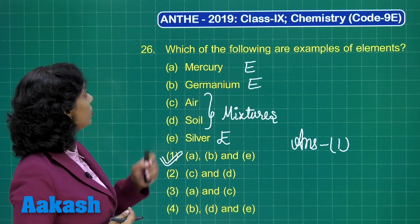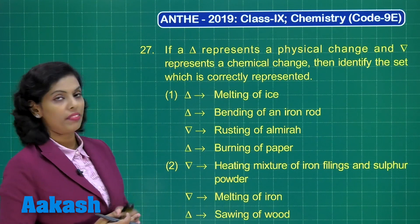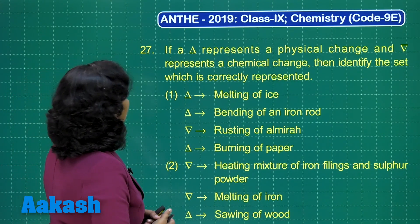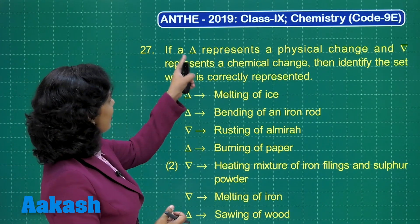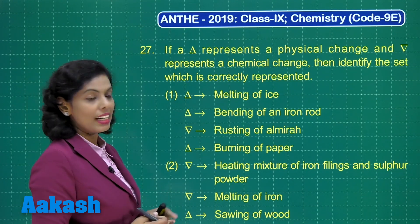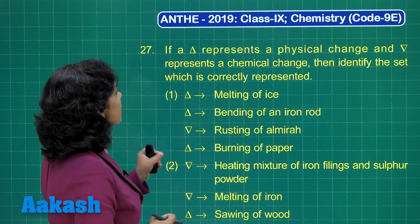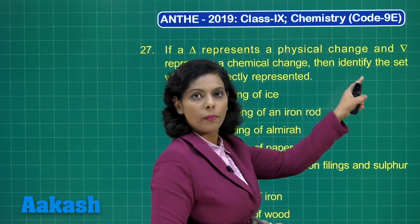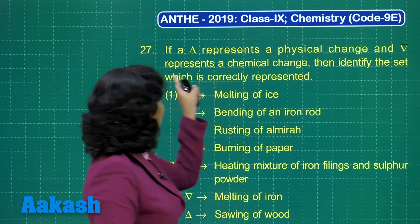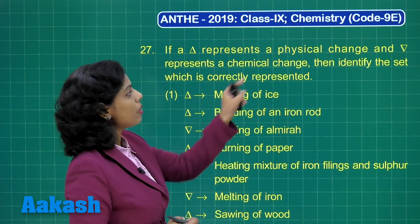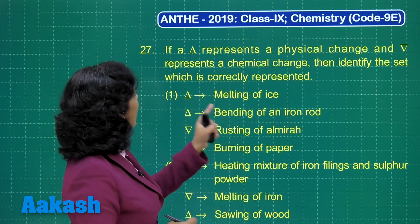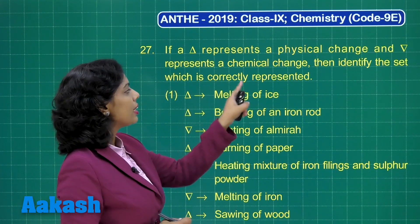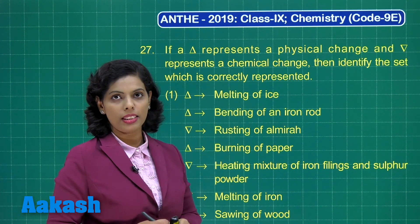Now question number 27: if a triangle (delta) represents a physical change and an inverted delta represents a chemical change, then identify the set which is correctly represented here.